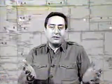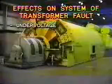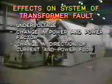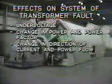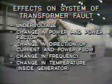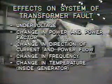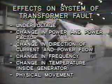For example, a fault in a generator could cause serious change to system conditions, such as under-voltage, a change in power and power factor, a change in direction of current and power flow, a change in frequency, a change in temperature inside the generator, and physical movement — for example, of the generator windings.